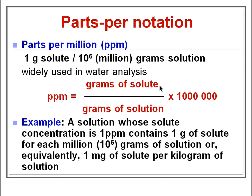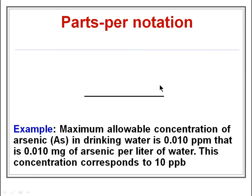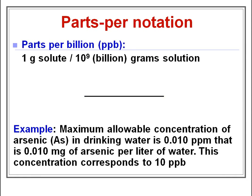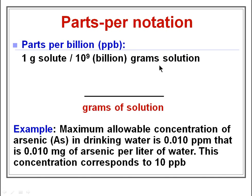Another parts per notation is ppb, which stands for parts per billion — an even more dilute solution. One ppb means 1 gram of solute per billion grams of solution, which is 10 to the power of 9 grams of solution.